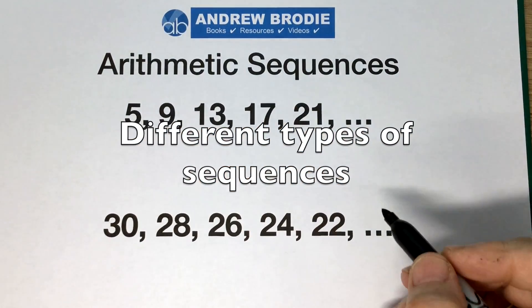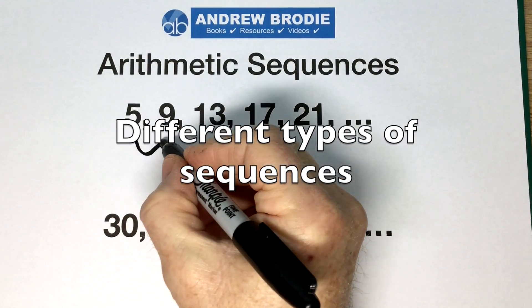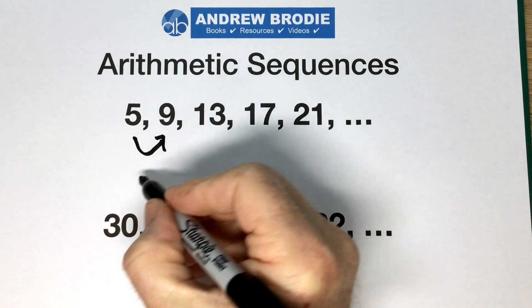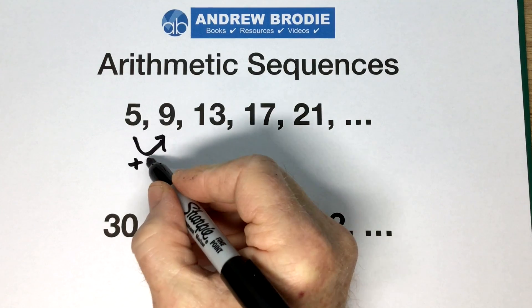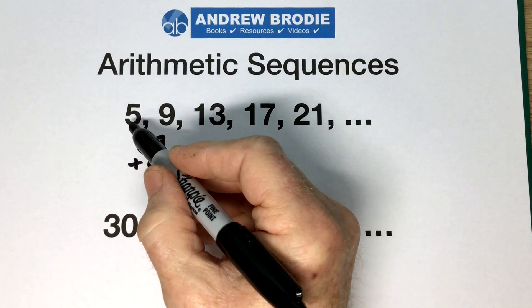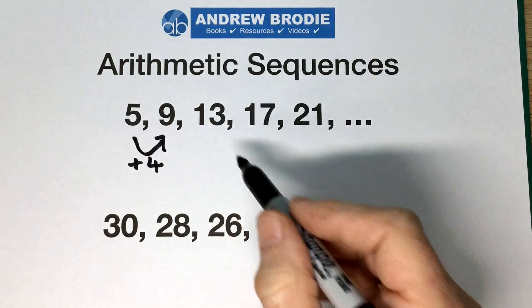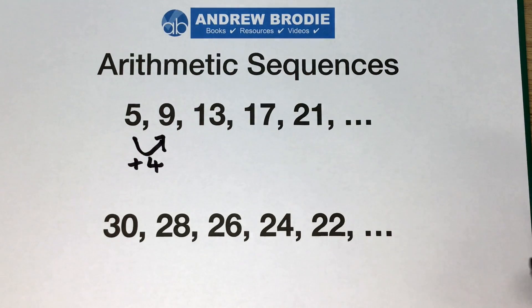This is an arithmetic sequence. It's going up by a constant amount — going up by 4 every time. 5 add 4 is 9, 9 add 4 is 13, and so on.